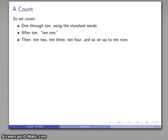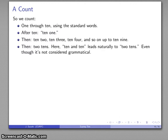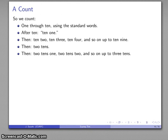And then after that, we'll have ten-two, ten-three, ten-four, and so on up to ten-nine. Then, two tens. And again, the non-grammatical form ten and ten would lead very naturally to two tens. Again, not considered grammatically correct. But then after that, two tens-one, two tens-two, and so on up to three tens, then four tens, five tens, and so on up to nine tens, at which point we introduce our next number word, the hundreds. At that point, our naming convention becomes a lot more regular.